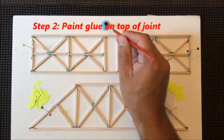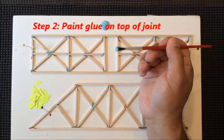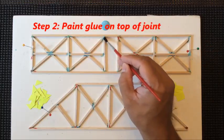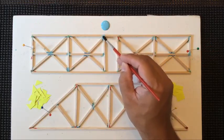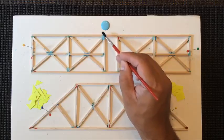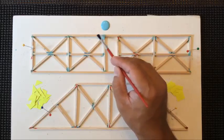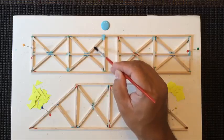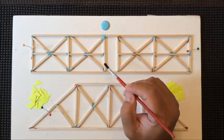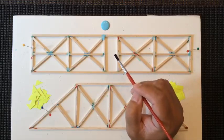Step number two of the four-step gluing process: add a little bit of glue to your brush and paint over the top of the joint. Paint the glue right over the top just to cover the joint itself. You don't want to add extra glue all around the outsides here because that will add too much weight to your bridge.